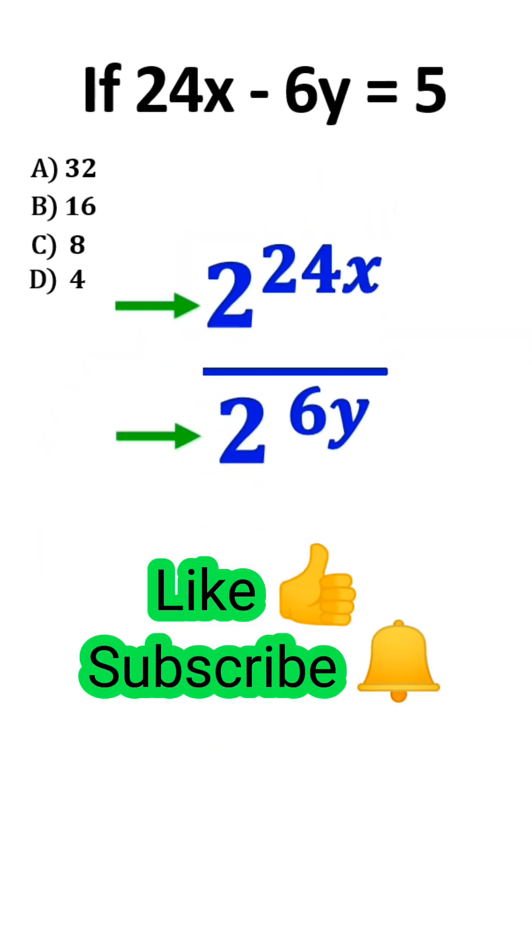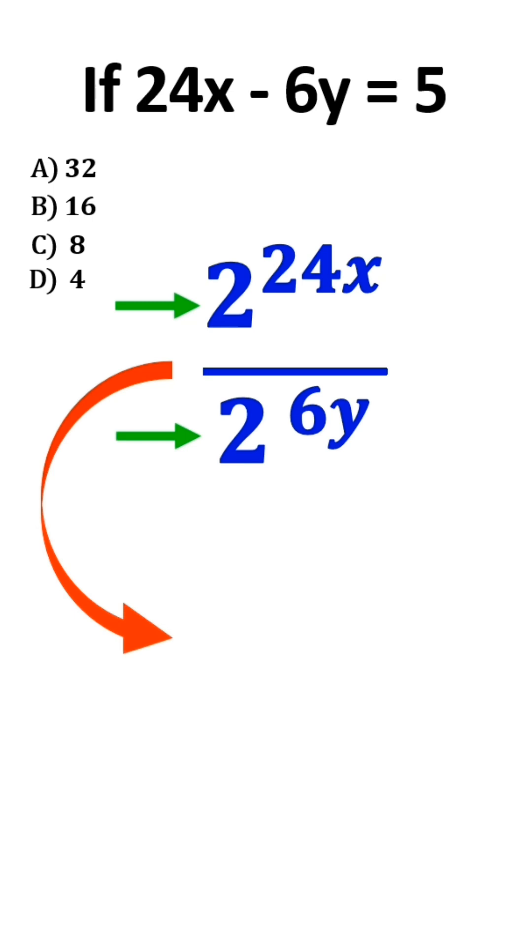That's great! Now, the bases are the same. So, we subtract these damn exponents. It becomes 2 to the power of 24x minus 6y.